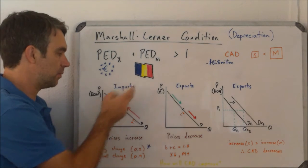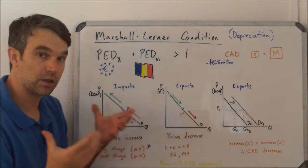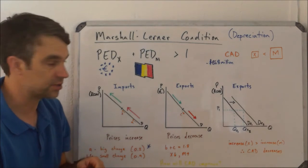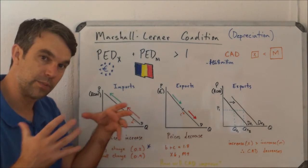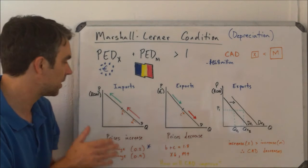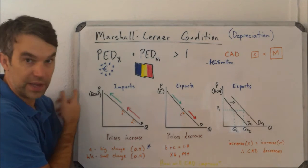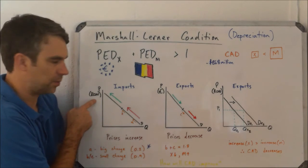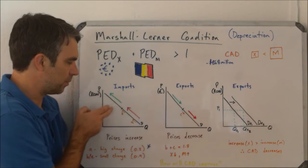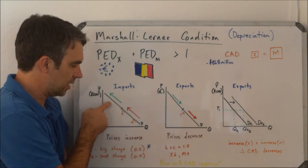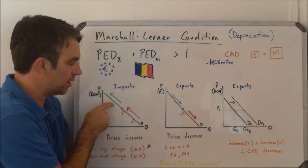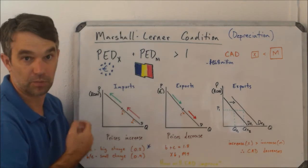Looking at the PED of imports first — this is the PED of all goods that Romania imports from the outside world, whether from the Eurozone or anywhere else. Their currency is the Romanian leu. The top half of the demand curve for imports — remember, the middle point is the point of unit elasticity, so all values above it are greater than one. That by itself would make the Marshall-Lerner condition true, keeping in mind we take absolute values of PED.